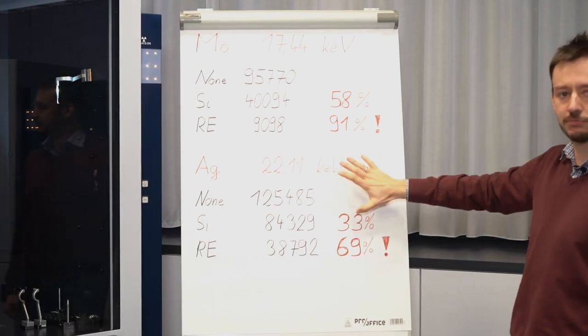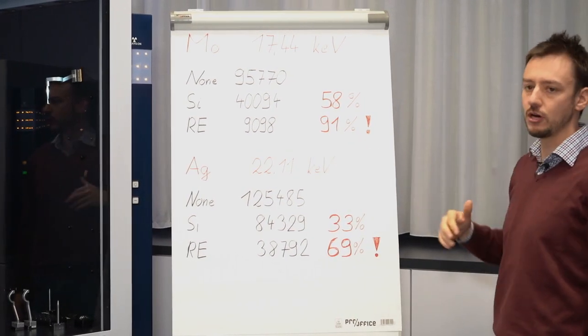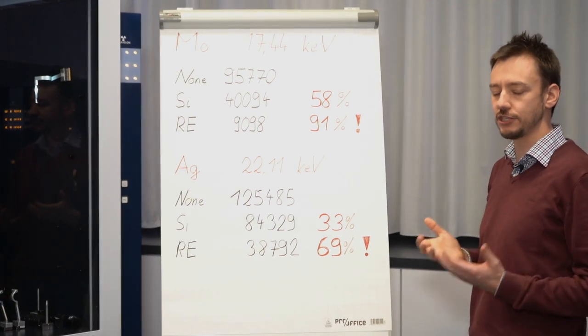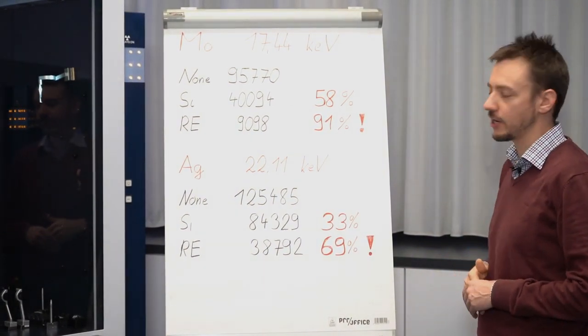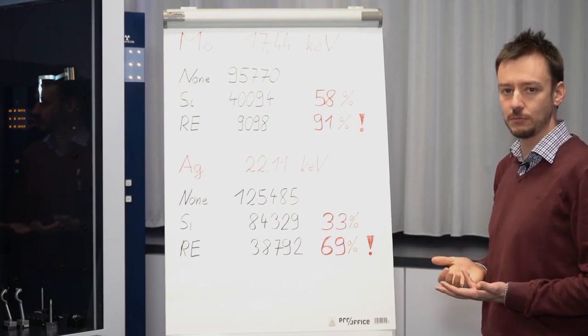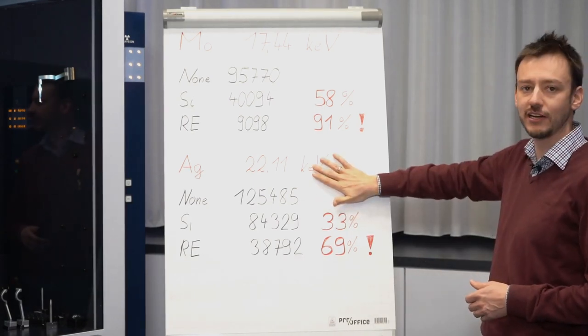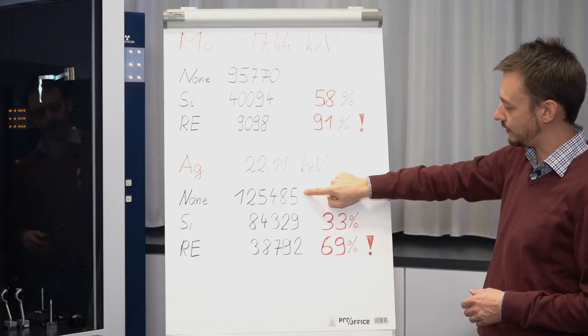We did the exact same experiment again with silver radiation because absorption of course depends on the material. The higher the atomic number the higher the absorption coefficient. The harder the radiation the lower the absorption coefficient. So here we should see this effect much more pronounced and that's exactly what we get.